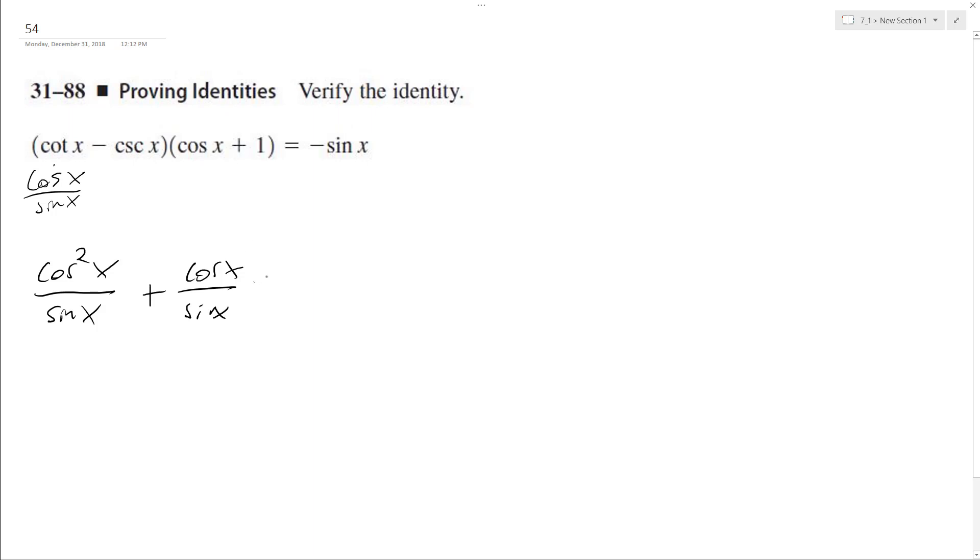And then cosecant, the same thing as 1 over sine x. So we get minus cosine x over sine x minus 1 over sine x. So actually these middle terms cancel out and we're left with cosine squared x minus 1 over sine x.